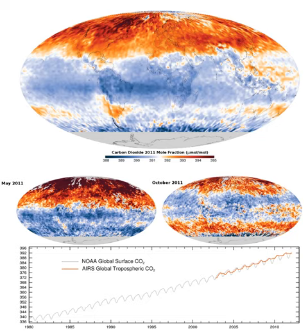Carbon dioxide concentrations have varied widely over the Earth's 4.54 billion year history. It is believed to have been present in Earth's first atmosphere, shortly after Earth's formation. The second atmosphere, consisting largely of nitrogen and CO2, was produced by outgassing from volcanism, supplemented by gases produced during the late heavy bombardment of Earth by huge asteroids. A major part of carbon dioxide emissions were soon dissolved in water and incorporated in carbonate sediments.